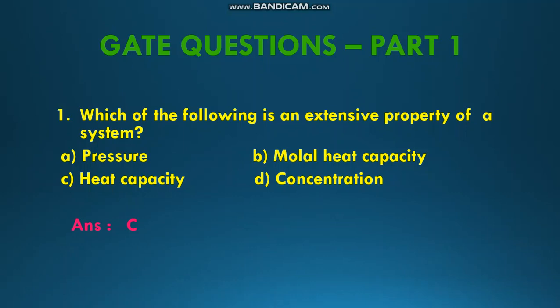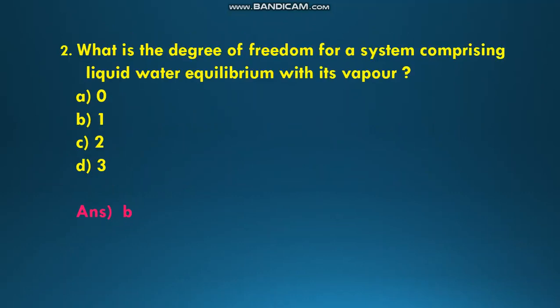The next question is: what is the degree of freedom for a system comprising liquid water equilibrium with its vapor? The options are given as A: 0, B: 1, C: 2, and D: 3. Degrees of freedom F is calculated based on the equation F is equal to 2 minus pi plus N, where pi is the number of phases and N is the number of components. Here liquid water is in equilibrium with its vapor, so you have to take two phases. If you make the calculation, we get the answer as F is equal to 1, so the answer is B.